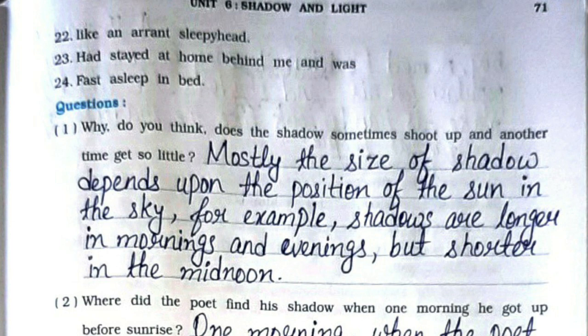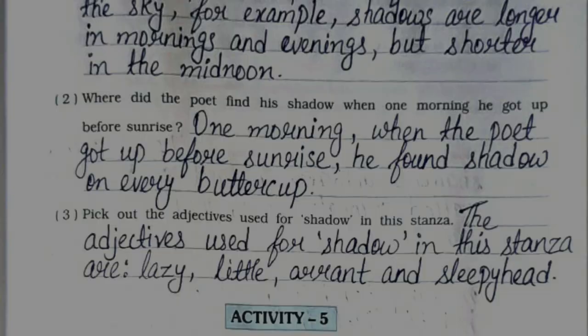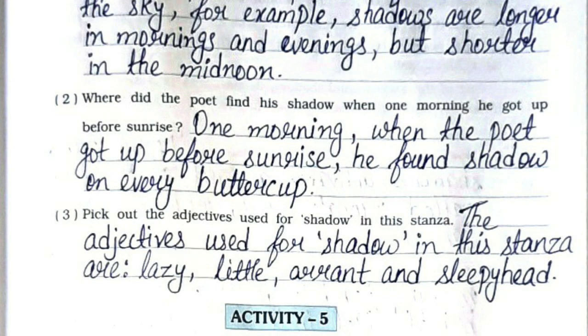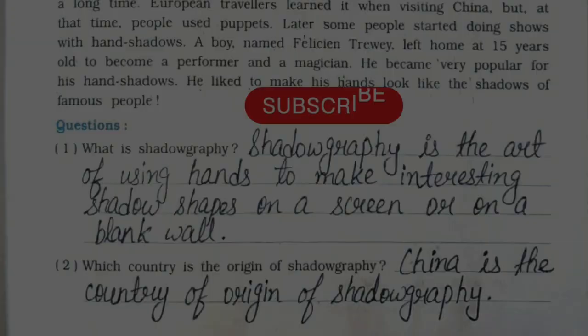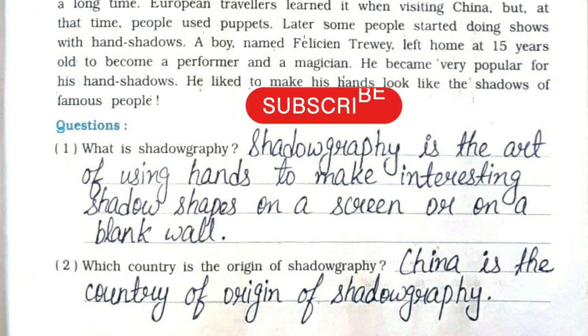Third: What according to the poet is the funniest thing about the shadow? The funniest thing about the shadow is that it grows quite fast. Next question: Why do you think the shadow sometimes shoots up and another time gets so little? The size of the shadow depends upon the position of the sun in the sky — shadows are longer in mornings and evenings but shorter at mid-noon.